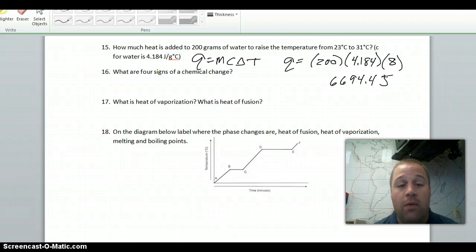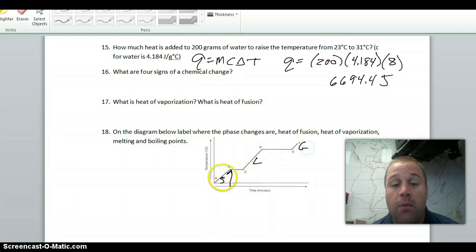On 18 now, labeling those on a graph, we need to say where the phase changes are, where the heat of fusion, heat of vaporization, melting, and boiling points. So I'm going to start right here, point B, right where we start going from. This is a solid, this is a liquid, this is a gas. Right when we start to go from a solid to a liquid, that is the melting point.